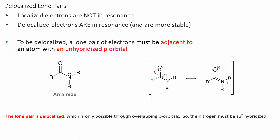Localized electrons are not in resonance — they are local to a specific atom and cannot contribute to resonance. Delocalized electrons are in resonance and can contribute to different resonance structures. Overall, delocalized electrons are more stable. To be delocalized, a lone pair must be adjacent to an atom with an unhybridized p orbital — meaning an sp2 or sp carbon, not an sp3 carbon. In this amide, the lone pair is delocalized because there is an sp2 carbon directly next door. The nitrogen must also be sp2 hybridized because those electrons need to be in a p orbital to contribute to resonance.